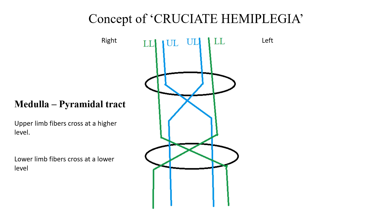Let's discuss the concept of cruciate hemiplegia. We can see this image of the pyramidal tract. We know that the pyramidal tract crosses in the medulla — 80% of fibers cross to the opposite side and continue as the lateral corticospinal tract.